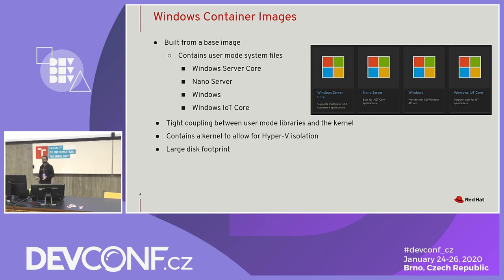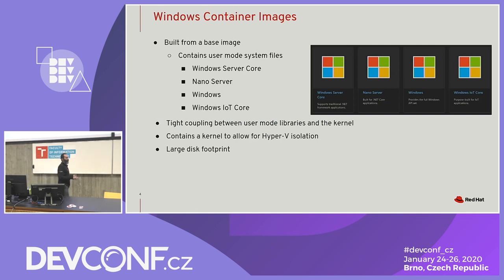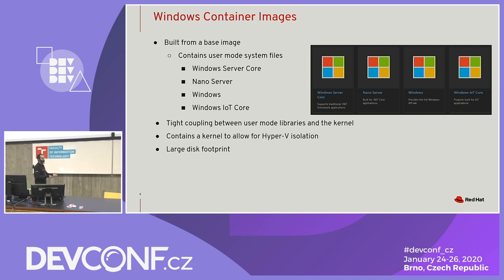With the kernel and user mode libraries bundled in, even the most basic Windows image has a pretty large disk footprint. This can cause problems in the Kubernetes space because you have the kubelet running inside a Windows node trying to launch an application that's pulling down a 10 GB container image.